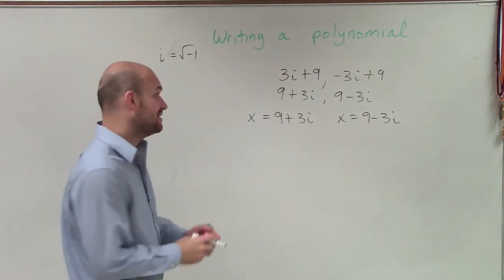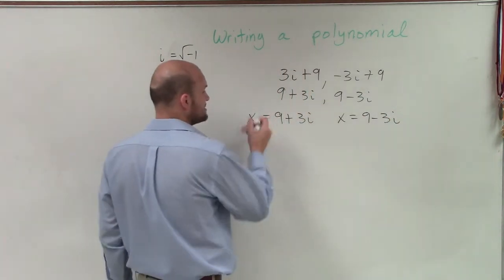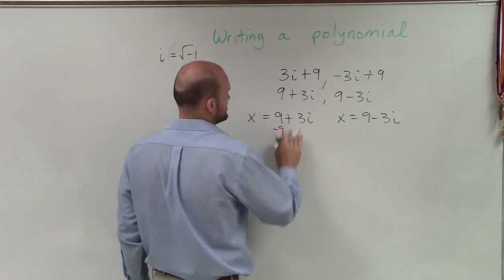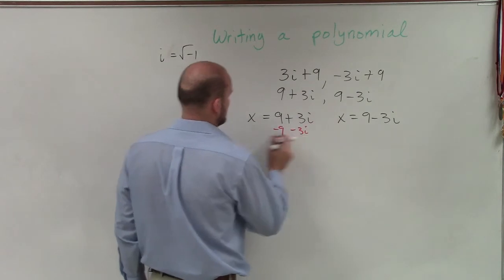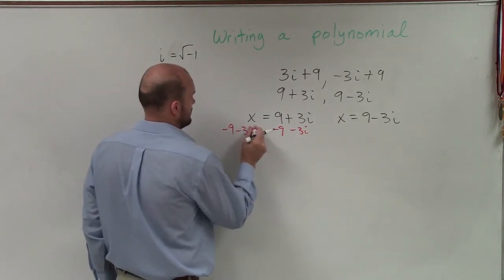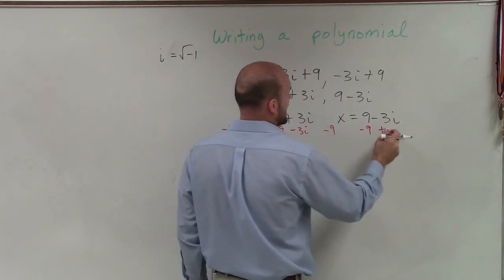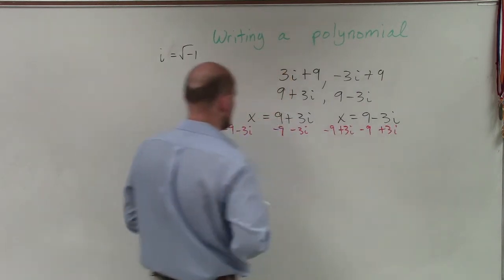Now, what I need to do is subtract them to set them equal to 0. So I'll subtract 9 and then subtract the 3i. So I'll subtract 9 and then I'll add 3i. OK?